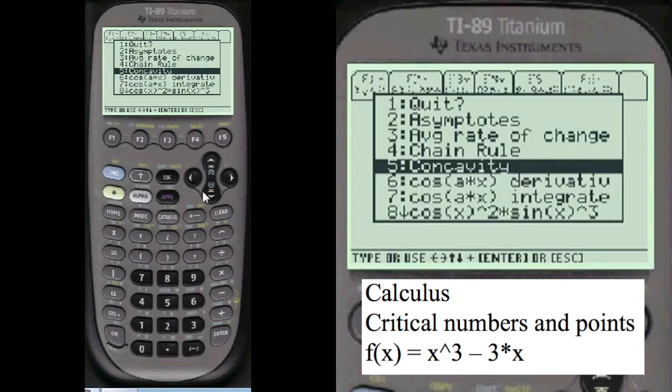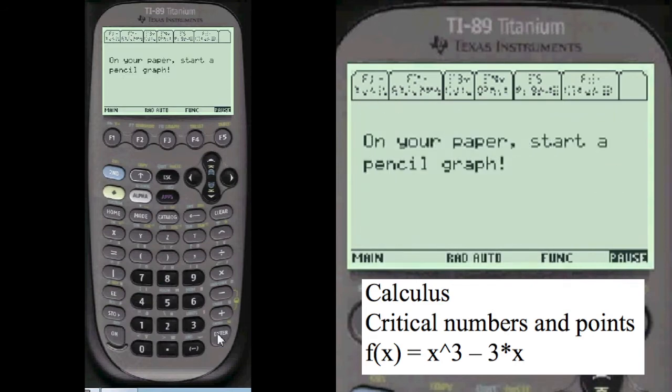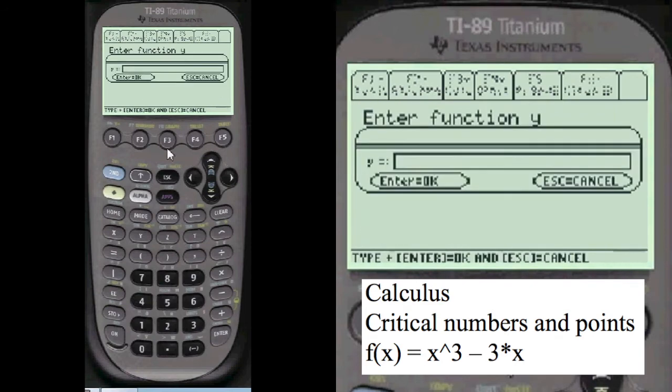Let's do it. Index 8 to get to my menu, and we're going to scroll down to critical points or numbers.